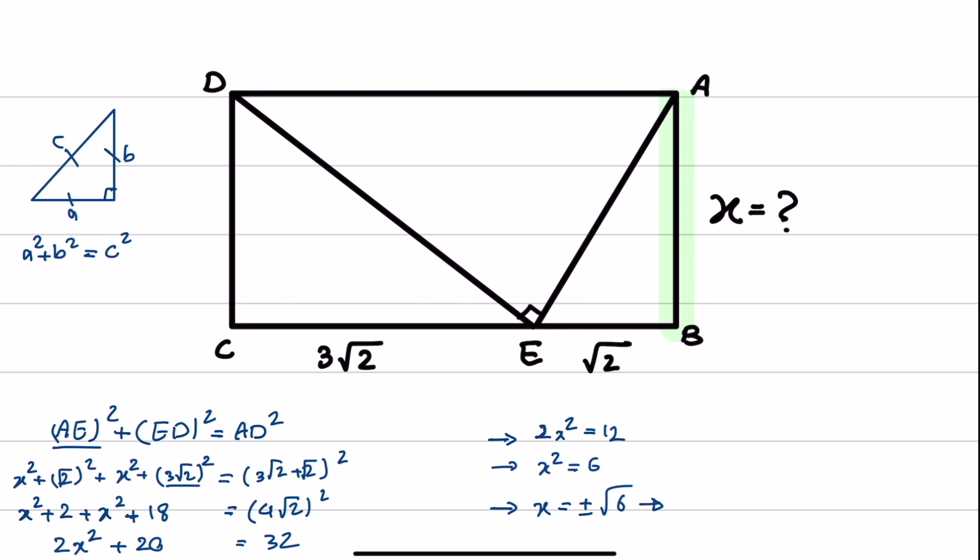Because we are dealing with length, negative 1 doesn't have any meaning. And we can get rid of that. Therefore, X is equal to square root of 6.